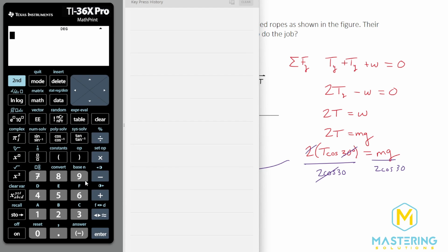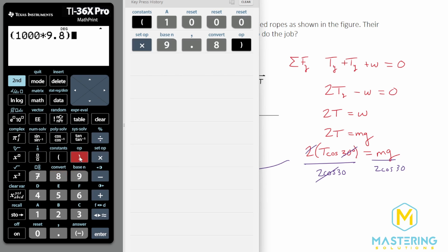When we come to the calculator here, we have 1000 times 9.8, and then that'll be divided by 2 cosine of 30.